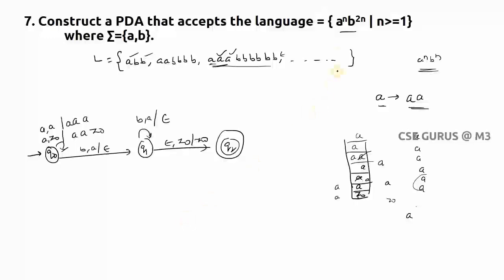This is how you answer questions of the form a^n b^(2n). If a similar question asks for a^n b^(3n), the logic is the same — for each single a, instead of pushing two a's, push three a's, so they match with the number of b's afterwards. We'll see the next question in the next video lecture. Thank you.